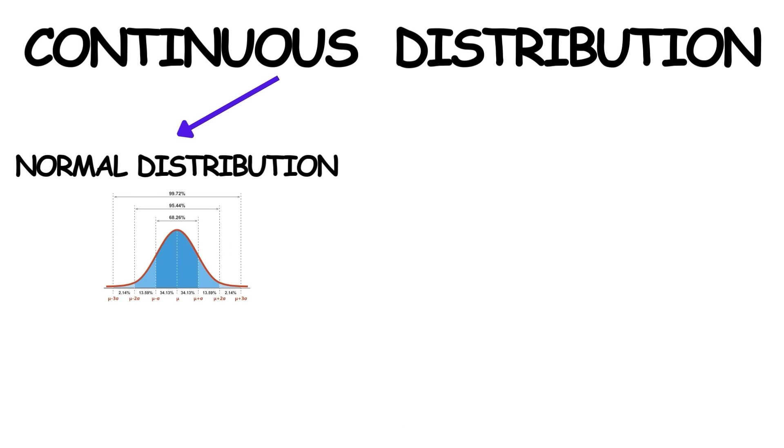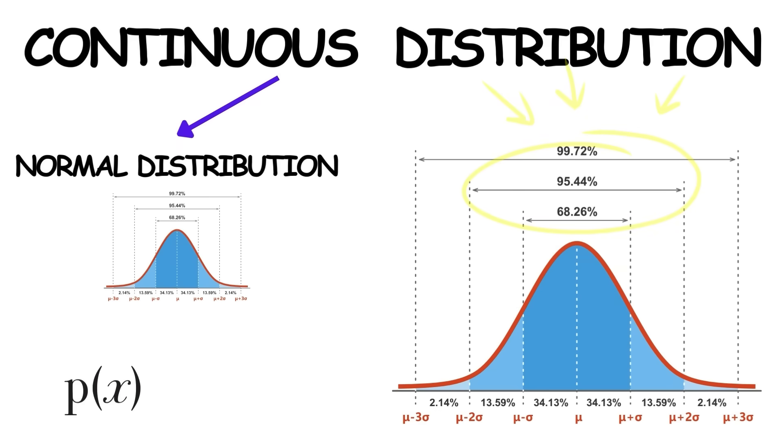When using a continuous distribution, such as the normal distribution, the probability of an event happening in a certain region is equal to the area between the graph of the distribution and the horizontal axis within that region, which can be calculated using integration. As we've seen, paradoxes often take skilled mathematical minds to resolve.